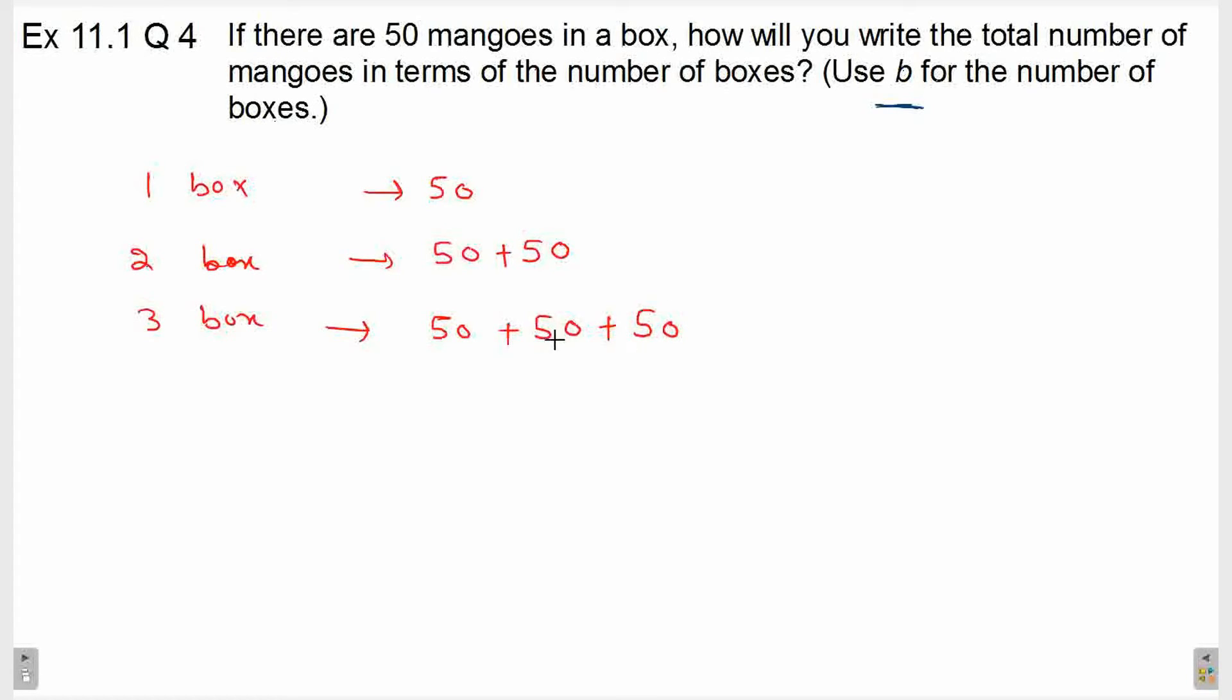मतलब हमने तीन boxes को यहाँ पर add कर दिया. एक box में 50, दूसरे box में भी 50, तीसरे box में भी 50. So, इस तरह से यह आगे चलता जाएगा. जितने number of boxes रहेंगे, उतने times हम लोग 50 को add करते जाएंगे. तो यहाँ पर देखो, यह exactly क्या बन गया है आपका? 50 का हम लोग table बना रहे हैं यहाँ पर.